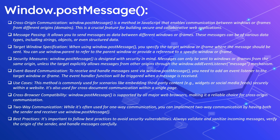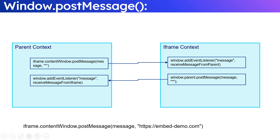Verify the origin of the sender to ensure messages are always coming from a known origin. In this diagram, we are using window.postMessage to communicate between a parent window and an iframe, doing two-way communication since both use postMessage and event listeners. The postMessage method has two parameters: the message, and the target origin. A star means the message can be dispatched to any origin, or you can specify a specific origin. If the origin matches https://embeddemo.com, the message will be dispatched. The message listener listens for incoming messages.